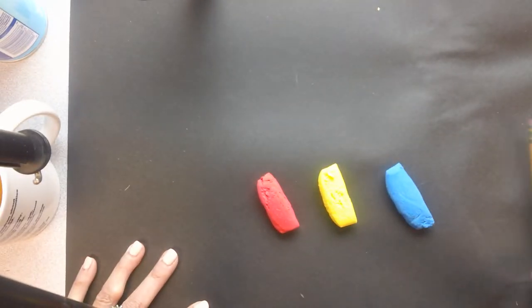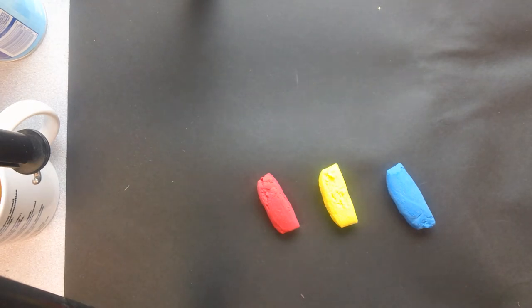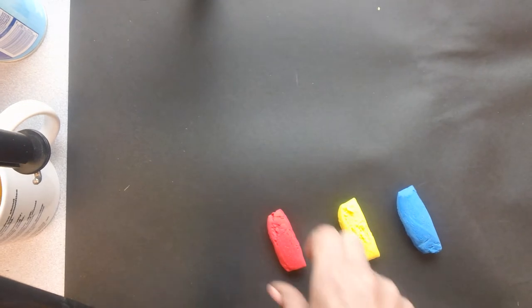So you have the primary colors, red, yellow, and blue, and you will have to mix colors to get the secondary colors. So I'm going to start, and I want you to start with your butterfly since the butterfly is going to take up most of your clay.